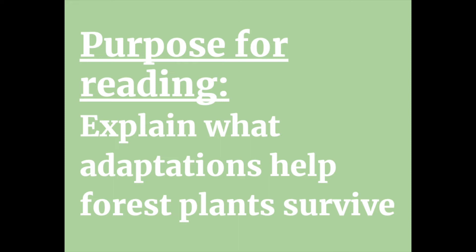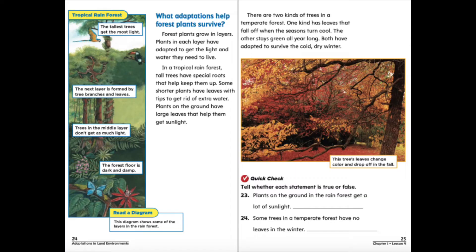Our purpose for reading today is to be able to explain what adaptations help forest plants survive. Forest plants grow in layers, and plants in each layer have adapted to get the light and water they need to live. In a tropical rainforest, tall trees have special roots that help keep them up. Some shorter plants have leaves with tips to get rid of extra water, and plants on the ground have large leaves to help them get sunlight. In a temperate forest, one kind of tree has leaves that fall off when the seasons turn cool, while the other stays green all year. Both have adapted to survive the cold, dry winter.